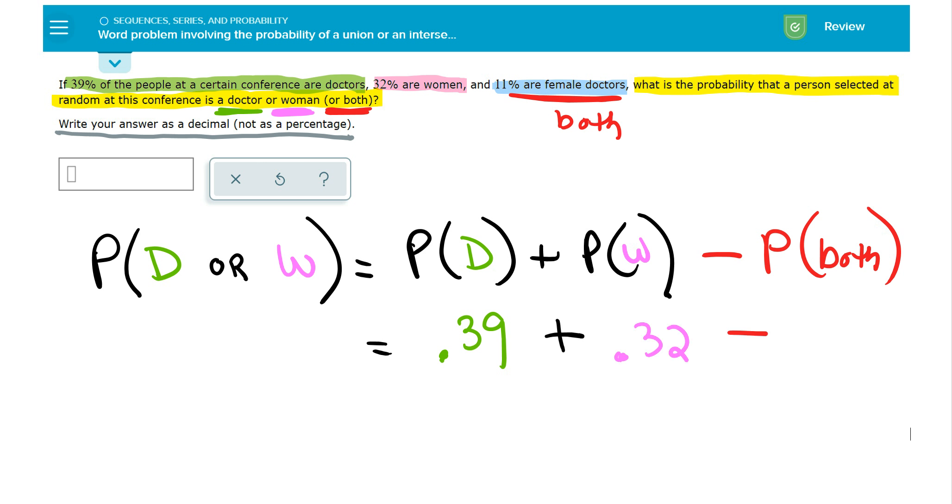And then I'm going to subtract out the 11% that are both females and doctors, because you've already accounted for them in both the green and the pink.